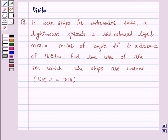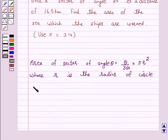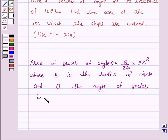Now this problem is based on the area of a sector of a circle. We know that the area of sector of angle theta is equal to theta upon 360 into pi r square, where r is the radius of the circle and theta the angle of the sector in degrees. So this is a key idea behind our question.